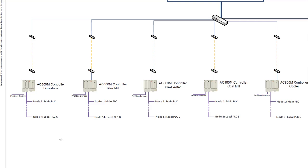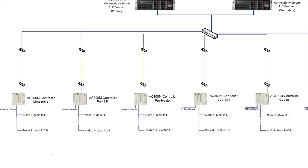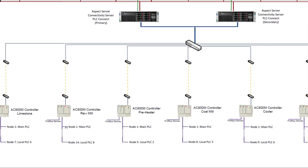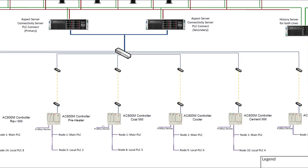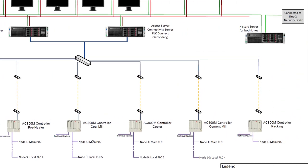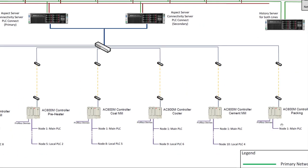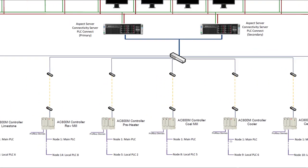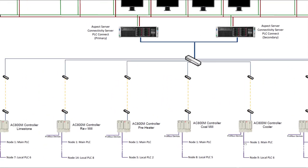Upward from the field level, we have the PLCs level — our control level. These PLCs are networked together in the form of a network topology; in this case we have the star topology.